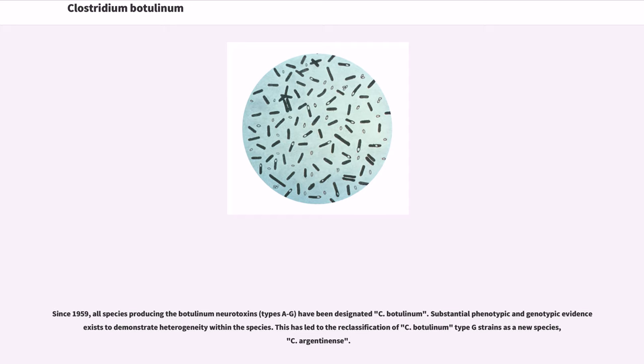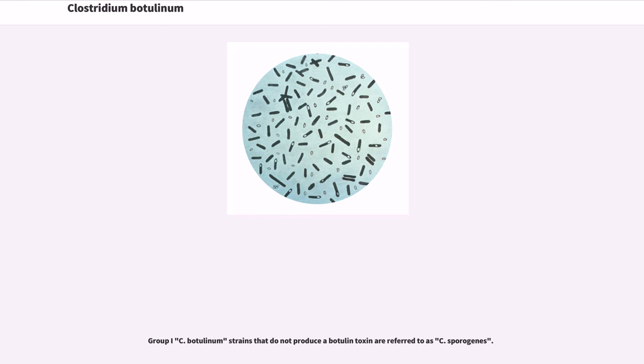Since 1959, all species producing the botulinum neurotoxins have been designated C. botulinum. Substantial phenotypic and genotypic evidence exists to demonstrate heterogeneity within the species. This has led to the reclassification of C. botulinum type G strains as a new species, C. argentinense. Group I C. botulinum strains that do not produce a botulinum toxin are referred to as C. sporogenes. The complete genome of C. botulinum has been sequenced at Wellcome Trust Sanger Institute in 2007.